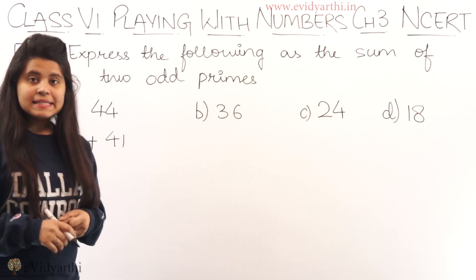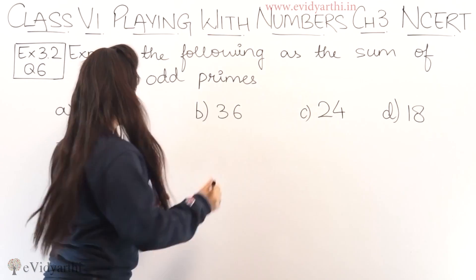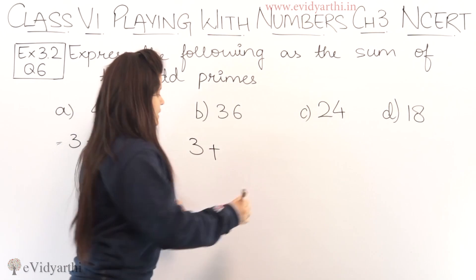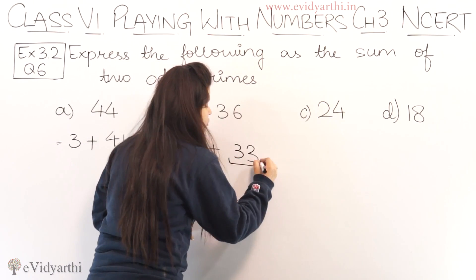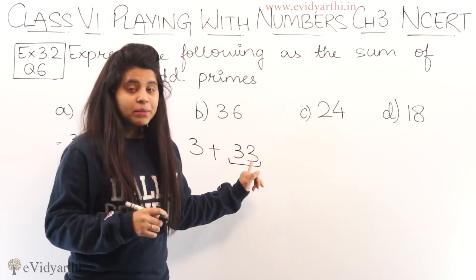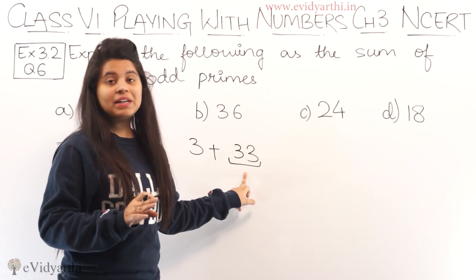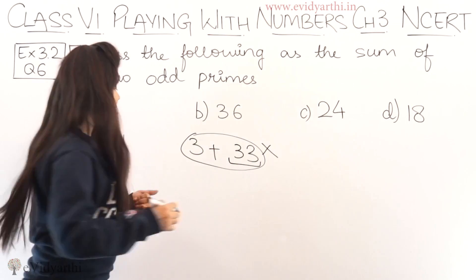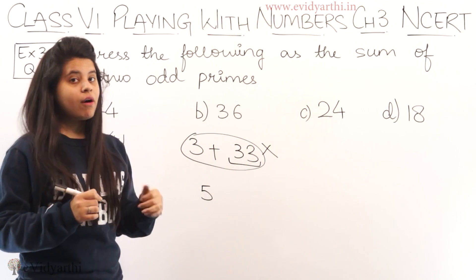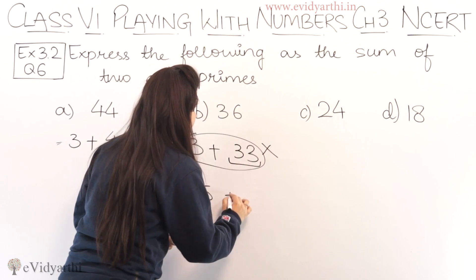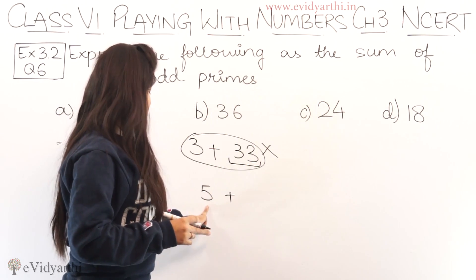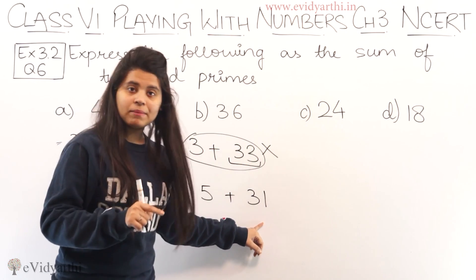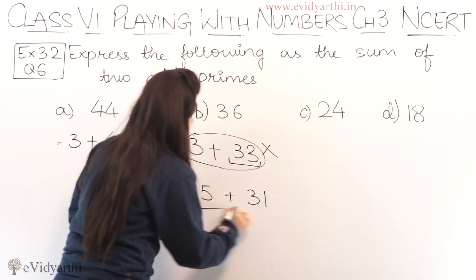Ab aate hain second part pe — second part hai 36. Again, 2 prime nahi le sakte hain, wo even hai. So 3 se start karte hain: 36 minus 3 is 33. Ab yeh jo 33 hai, yeh hamara odd prime nahi hai — odd number to hai, lekin prime number nahi hai, kyunki yeh 11 ke table mein aata hai. So yeh combination work nahi karega. Next odd prime 5 hai. 36 minus 5 is 31. Ab agar hum dekhein, to 31 odd number bhi hai aur odd prime number bhi hai, so one option is 5 plus 31.